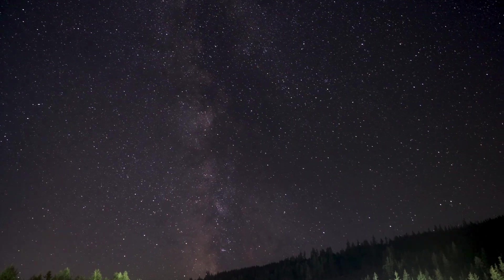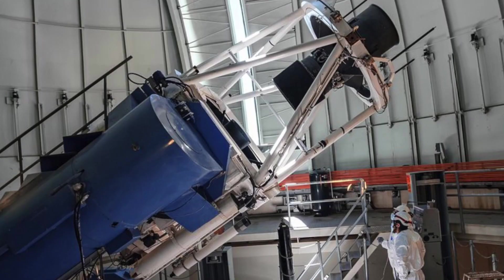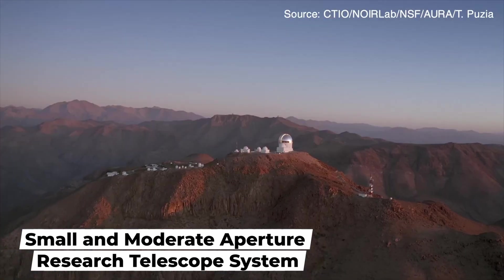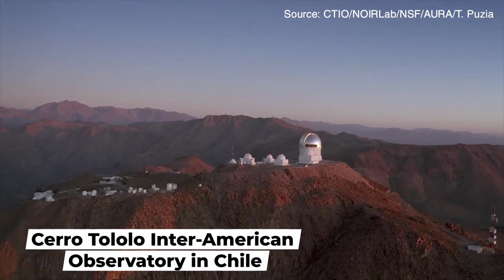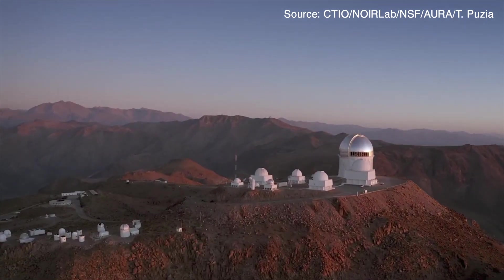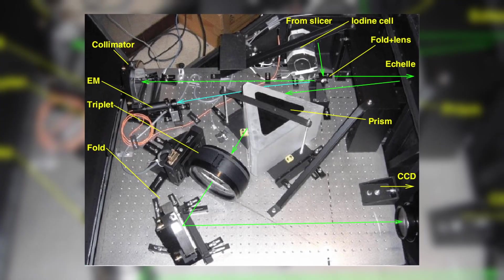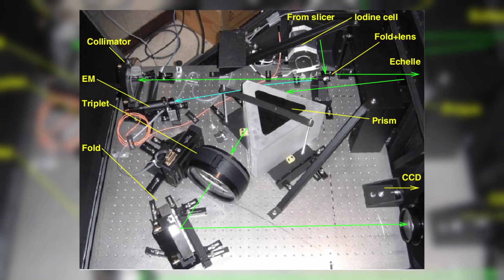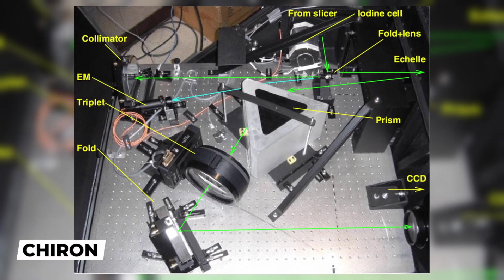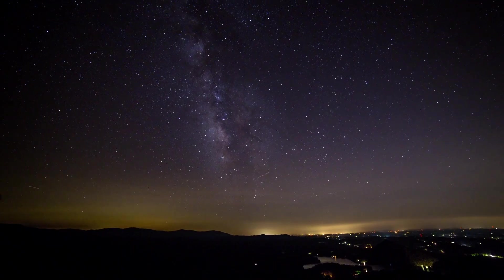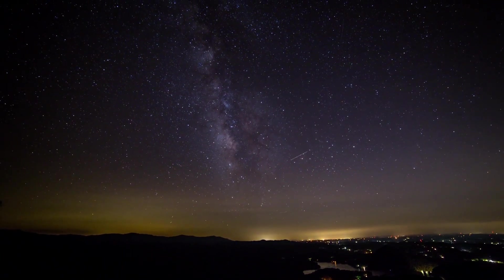The SMARTS 1.5, short for small and moderate aperture research telescope system, is a type of telescope located at the Cerro Tololo Interamerican Observatory in Chile. As of August 2020, it is operated with a single instrument, the high-resolution optical spectrograph Chiron. It is a relatively small telescope with a 1.5-meter mirror, but it is still capable of capturing detailed images and spectra of astronomical objects.